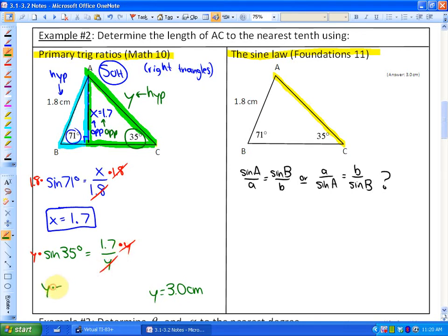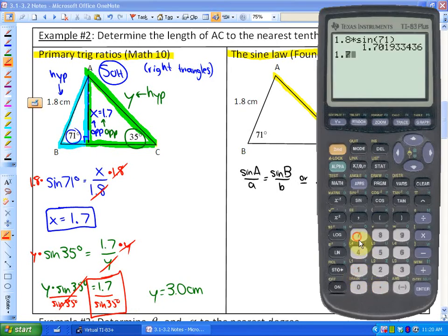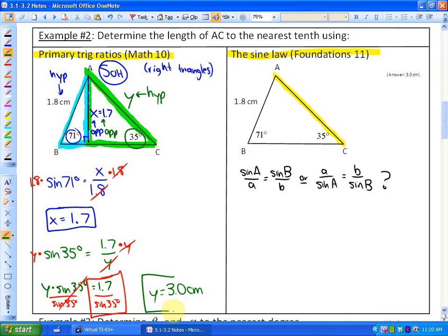At this point in time, I have y times sin 35 equals 1.7. So my next step of algebra would be to divide by sin 35. So on my calculator, y is going to equal this part here. So as long as I'm careful, do 1.7 divided by sin 35. And make sure that I close that bracket. And hit enter, and I get roughly 2.96, which the nearest tenth is approximately 3.0. So that's my solution for the length of AC. We are now going to use the sine law to get the exact same solution.